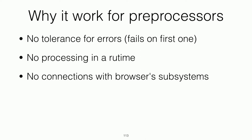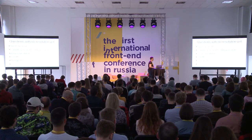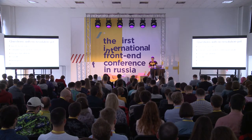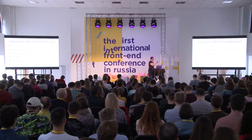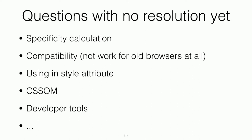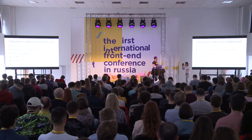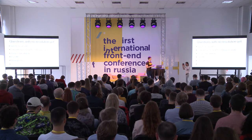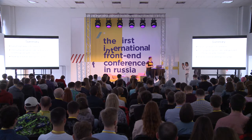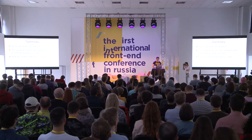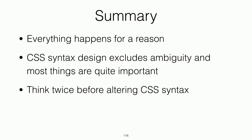You might ask why it works for preprocessors but is problematic for browsers. Preprocessors are not tolerant to errors — they fail on the first one. They are not processing in runtime and have no connections with any browser subsystems. For browsers, we have many open questions: how do we calculate the specificity of selectors, what do we do with all browsers, can we use nested rules inside a style attribute? It's not so straightforward for browsers right now, and the benefit is unclear. In summary, once again, everything happens for a reason. CSS syntax design excludes ambiguity, is very good for simple and performant parsers, and we need to think twice before altering CSS because it has influence on many parts of browsers.